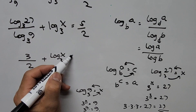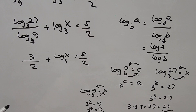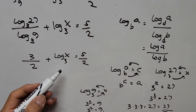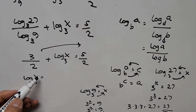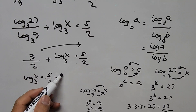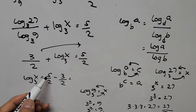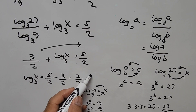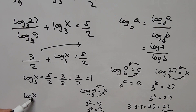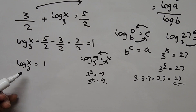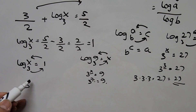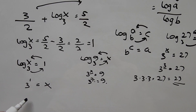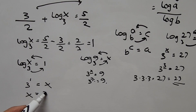Now we have 3 halves plus log of x base 3 equals 5 halves. To isolate the variable, we move 3 halves to the right side. The equation becomes: log of x base 3 equals 5 halves minus 3 halves, which is 2 halves, which equals 1. Transforming into exponential form: 3 to the power of 1 equals x, so x equals 3.